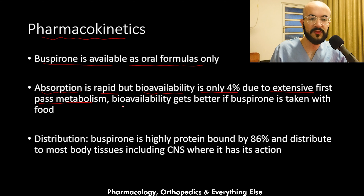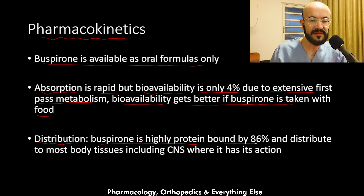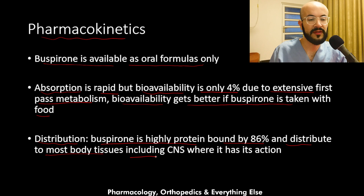The bioavailability of buspirone gets better if the drug is taken with food. Regarding distribution, buspirone is highly protein-bound at 86%, and the remaining fraction distributes to most body tissues, including the central nervous system, where it has its action.